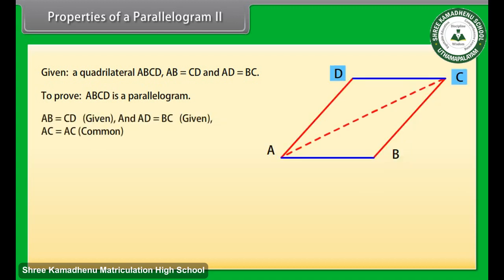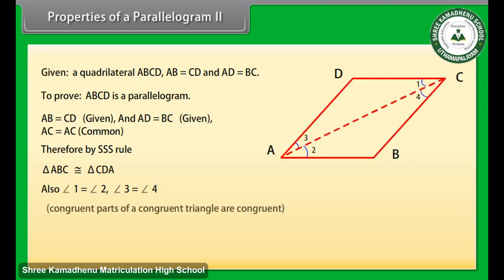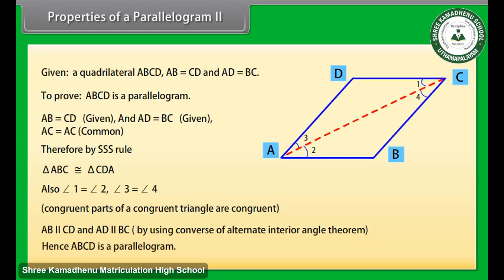AB is equal to CD and AD is equal to BC. AC is equal to AC — common. Therefore, by SSS rule, triangle ABC is congruent to triangle CDA. Also, angle 1 is equal to angle 2 and angle 3 is equal to angle 4, because corresponding parts of congruent triangles are equal. Therefore AB is parallel to CD and AD is parallel to BC. Hence ABCD is a parallelogram.